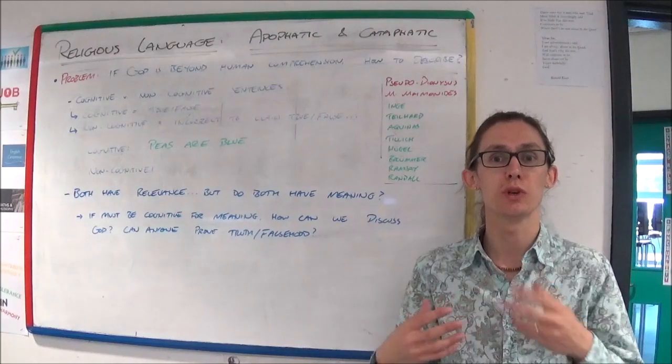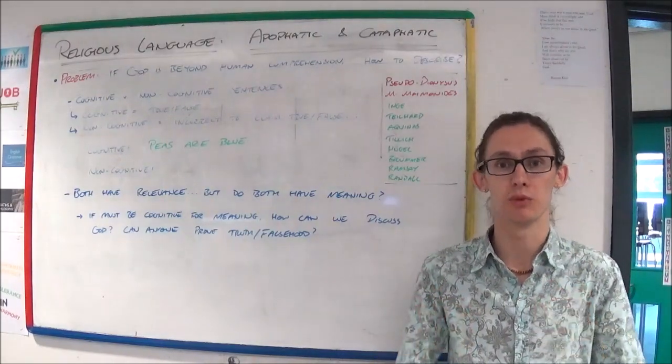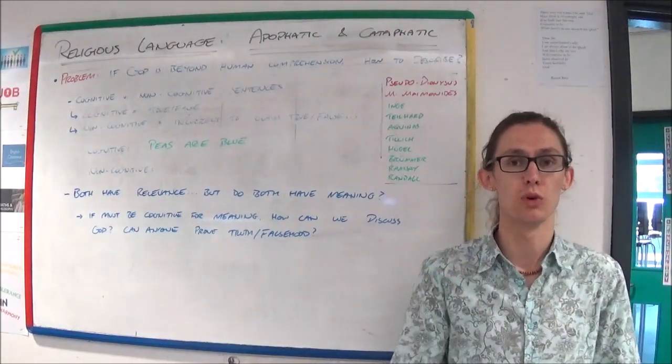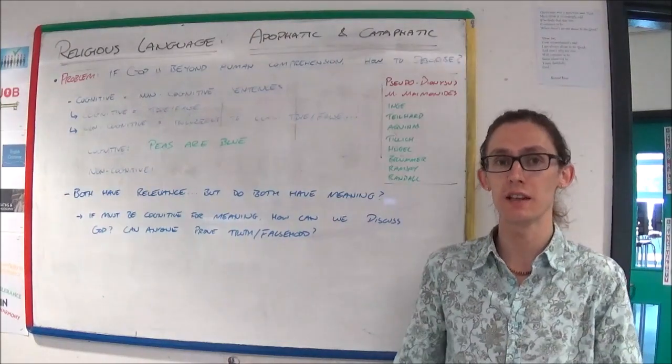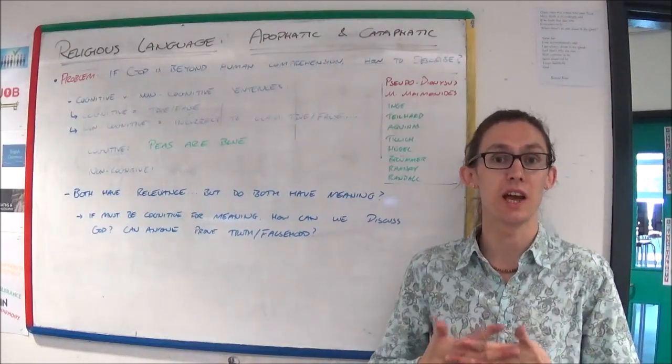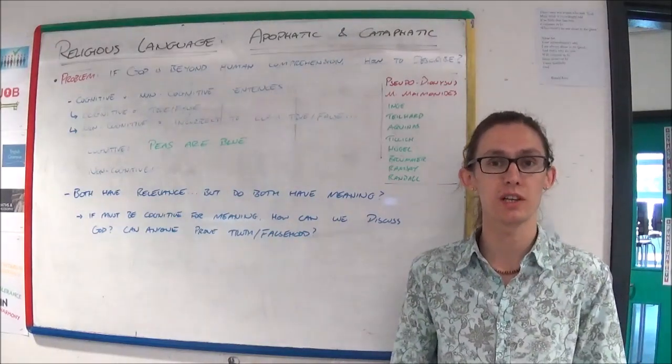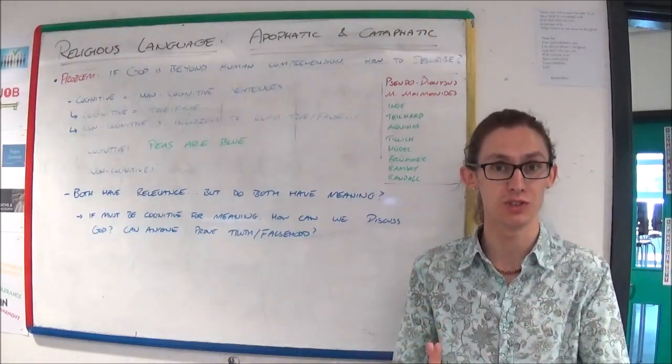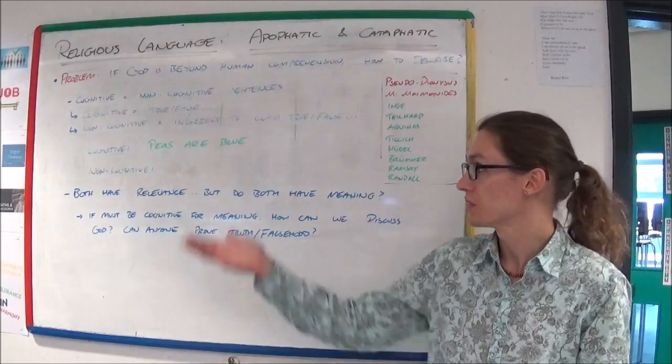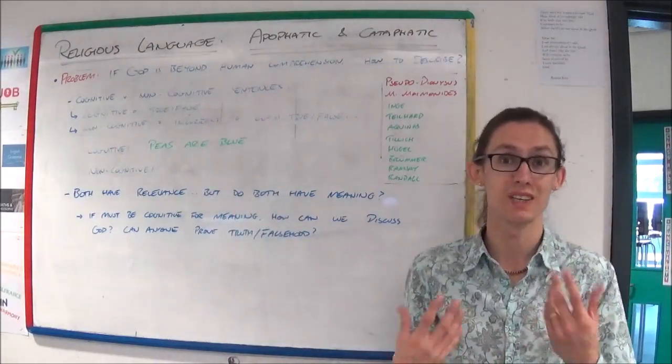If you could realistically say to someone that's not true or that is true at the end of it, then that is a cognitive sentence. So normally when we're describing things we use cognitive sentences. For example, here I'm describing peas even though I'm wrong.